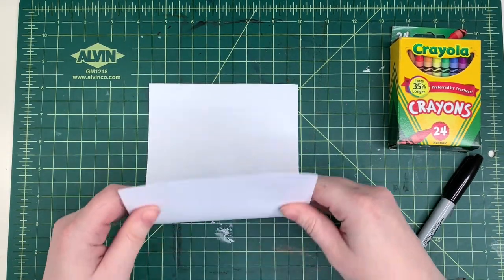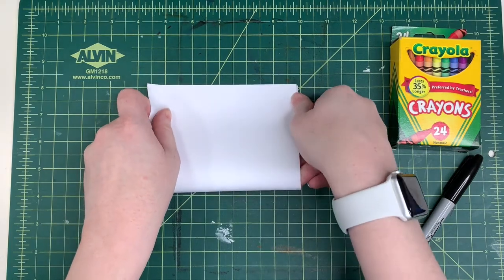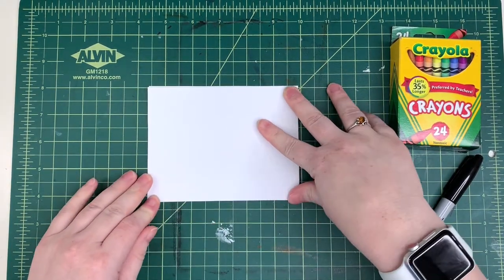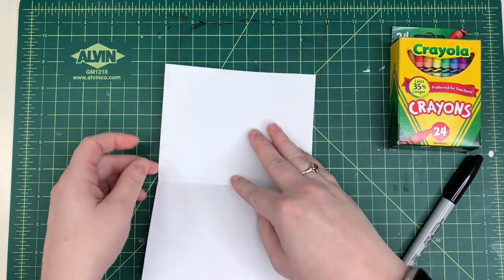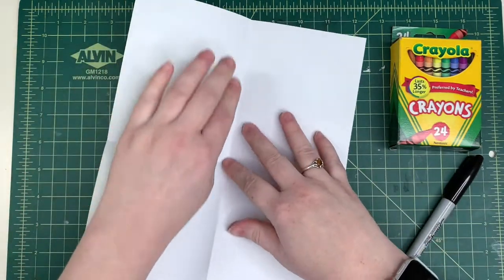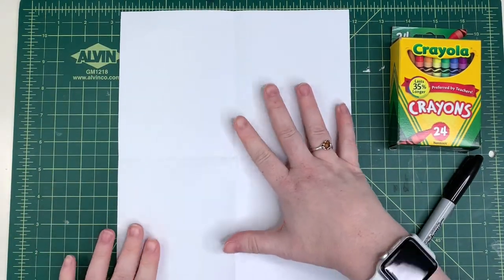Rotate your paper once and do the same step, folding it up to the top as best as you can and then getting it nice, crispy, crunchy. Afterwards, when you open it up, you should have four equal squares to make your L-O-V-E.